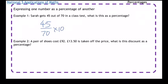And then times it by 100. So 45 over 70 times 100, put into a calculator, it is 64.3 percent.